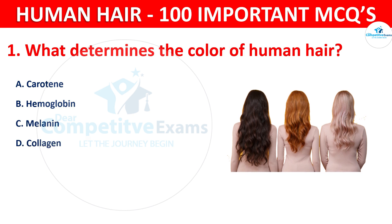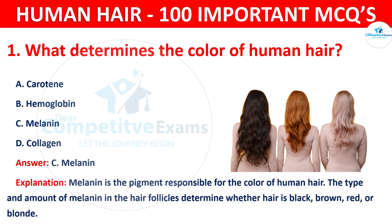The correct answer is C — melanin. Melanin is the pigment responsible for the color of human hair. The type and amount of melanin in the hair follicles determine whether the hair is black, brown, red, or blonde.